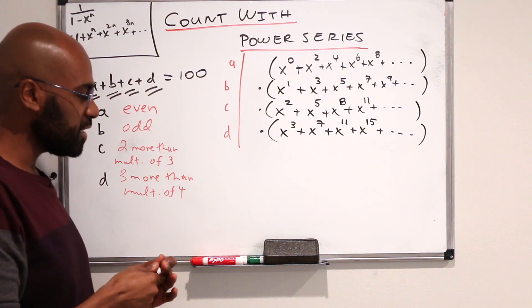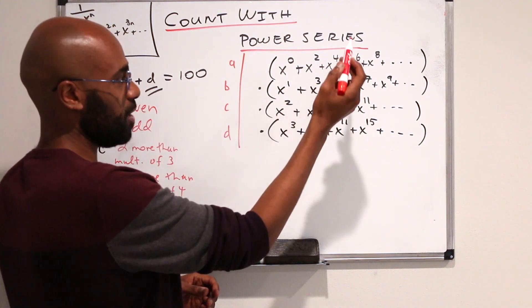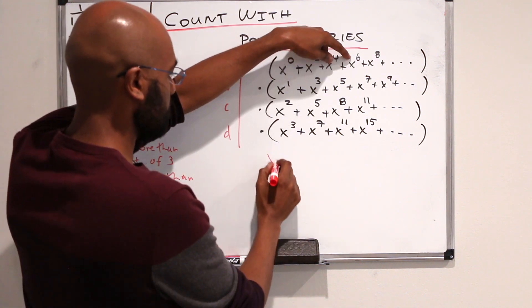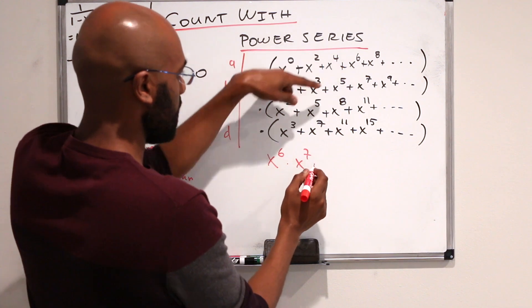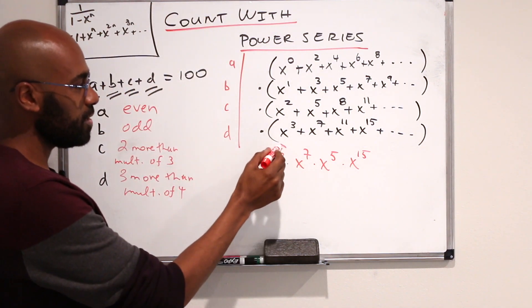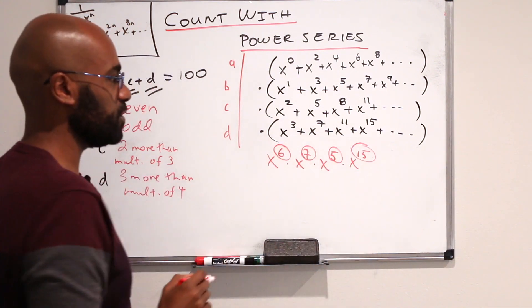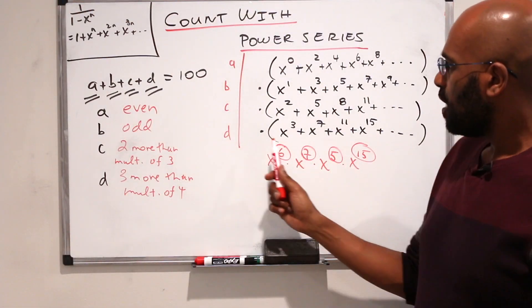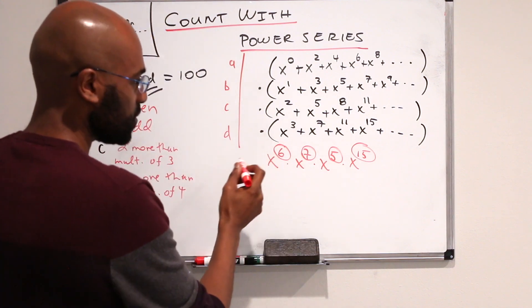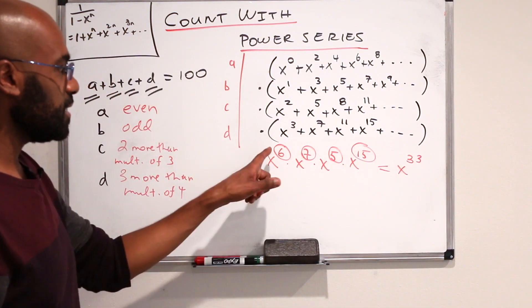Let's think about what a prototypical term in the product of this thing is. A prototypical term takes a term from here, multiplies by a term from here, multiplies by a term from here, and multiplies by a term from here. For example, a term might look like x to the 6th times x to the 7th times x to the 15th. Here is our choice for A, here is our choice for B, here is our choice for C, and here is our choice for D. Each of these things actually satisfy our conditions. This term itself is x to the exponent where we sum all these things up, and in this case it's 33.